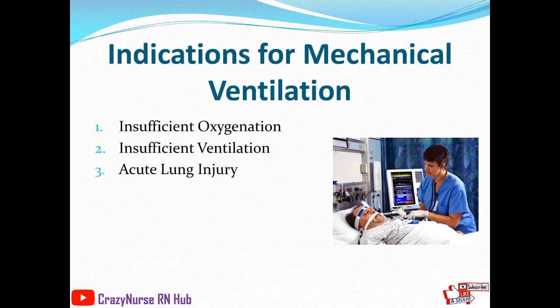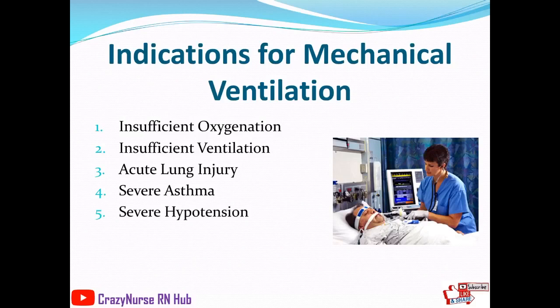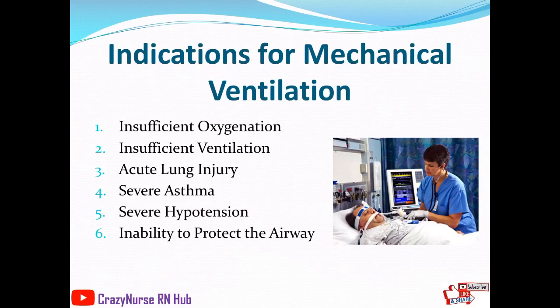Next, we have acute lung injury — an acute injury to the lungs from events such as sepsis, pneumonia, aspiration, or trauma. Also, we have severe asthma, where mechanical ventilation may be indicated in patients experiencing a severe asthma attack requiring intubation. We also have severe hypotension — mechanical ventilation may be indicated in severe episodes of low blood pressure such as shock, sepsis, and congestive heart failure. Lastly, the inability to protect the airway: an unconscious patient may be at risk for aspiration, so establishing a patent airway via mechanical ventilation can prevent this.